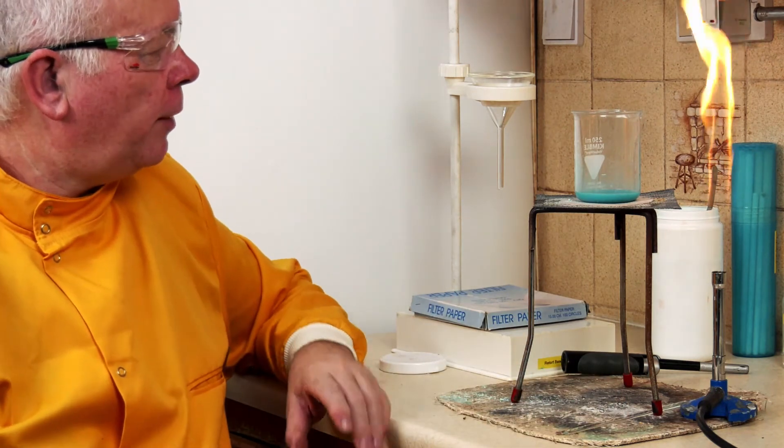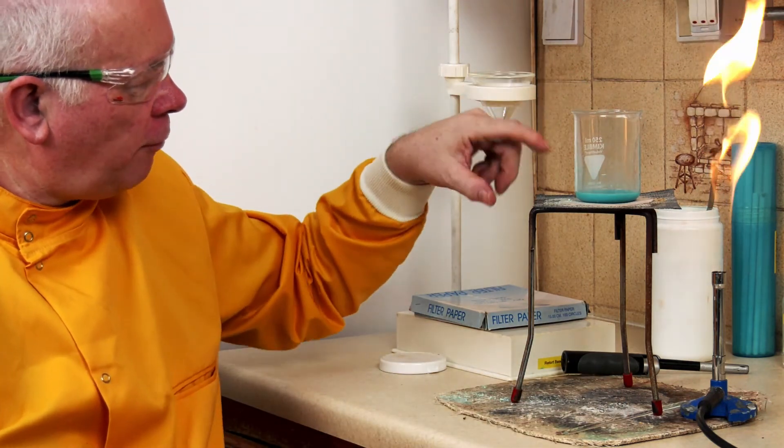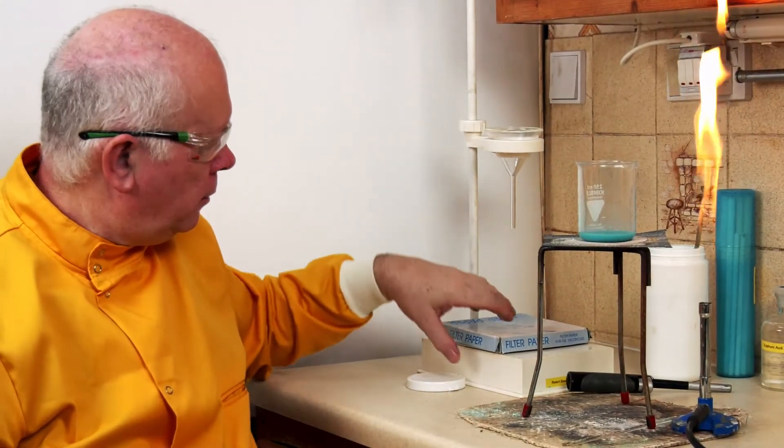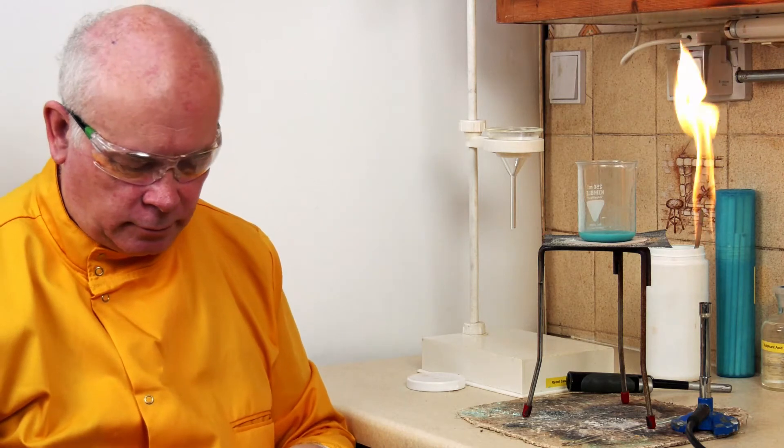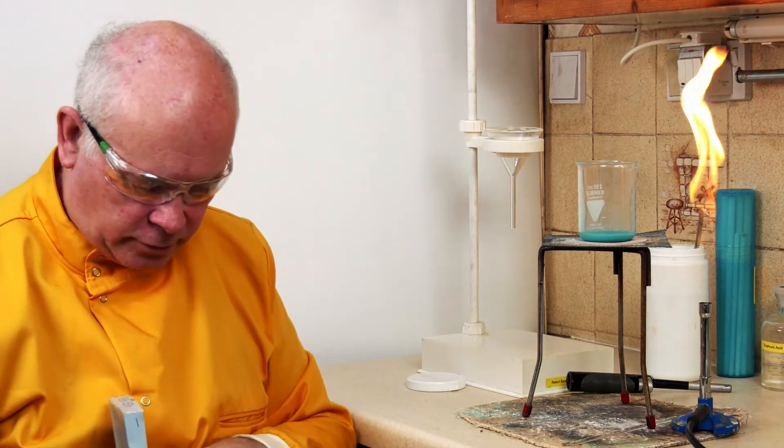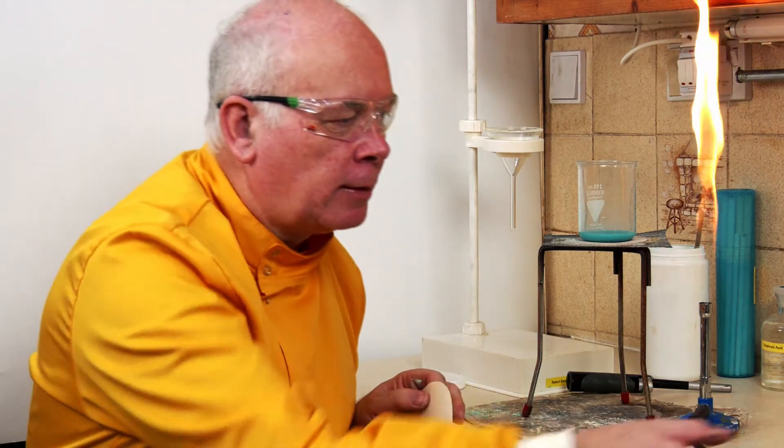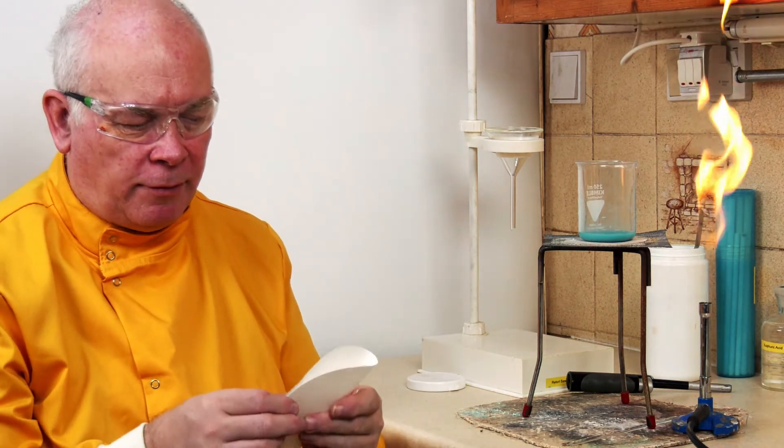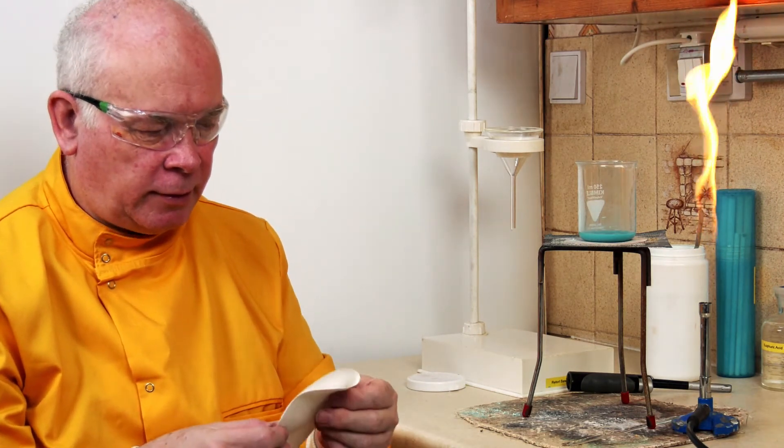Our next job then is to filter off all this extra carbonate that's unwanted in the experiment. Now, if I'm going to do a filter, then let's take a piece of filter paper. There's several ways of doing this.